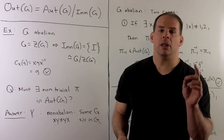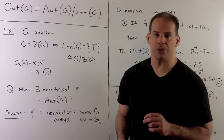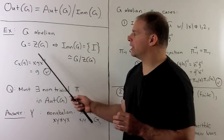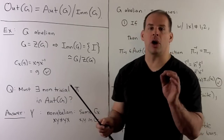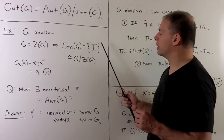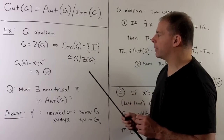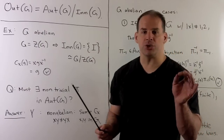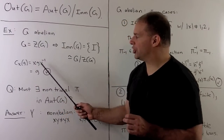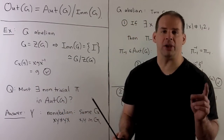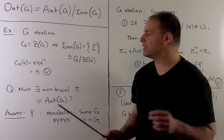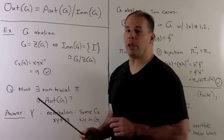Let's look at some examples. If G is abelian, G equals its center, so the inner automorphism group is isomorphic to G/Z(G), which is the one-element group. We can see this directly: c_x(g) = xgx⁻¹, and since G is abelian we can push x⁻¹ next to x, leaving g. So every c_x is the identity map.